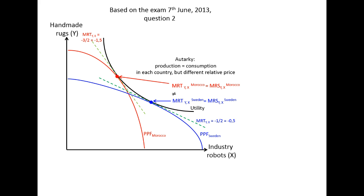In the autarky situation, production is equal to consumption in both countries, but we have different relative prices. That is the base for all international trade — as long as we have different relative prices, there are gains to be made.